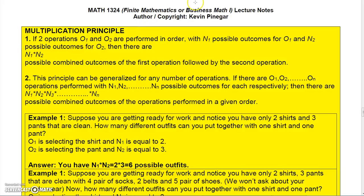Now let's talk about another principle called the multiplication principle. Basically, the multiplication principle says that if two operations, operation 1 and operation 2, are performed in order, and you have n1 possible outcomes for the first operation and n2 possible outcomes for the second operation, then there are n1 times n2 possible combined outcomes for the first operation followed by the second operation.